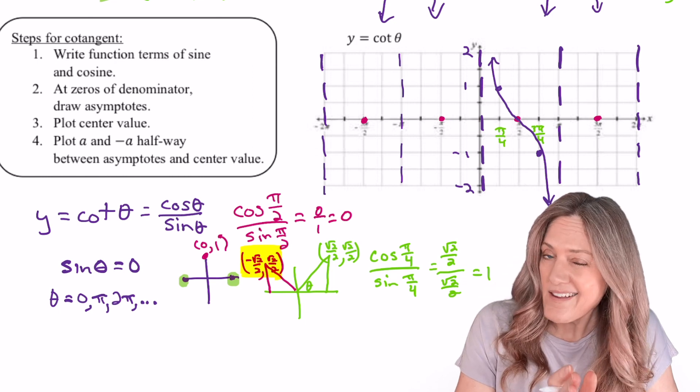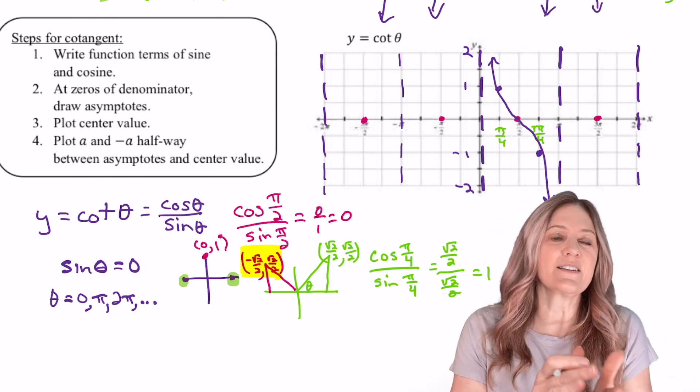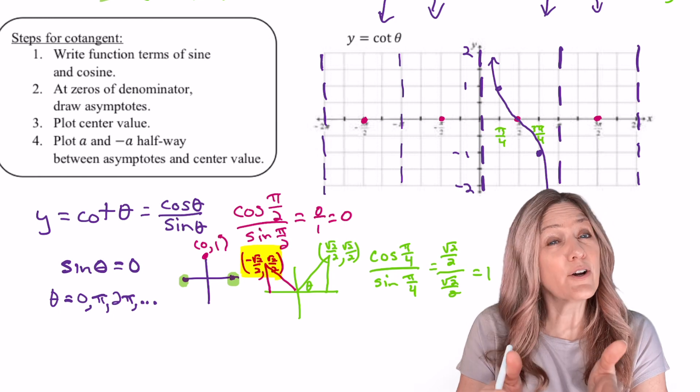So once we have the asymptotes for cotangent, it's not too hard to think through the graph or the curve for cotangent.